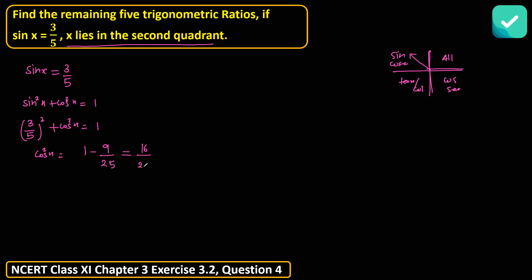If you simplify this you'll get 25 minus 9, that is 16 over 25. Therefore, cos x equals square root of 16 over 25, which is plus minus 4 over 5. Now which value to take? The cos x would be negative in the second quadrant, so x lies in the second quadrant. Obviously, we'll take minus, so cos x equal to minus 4 over 5.